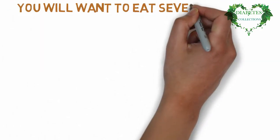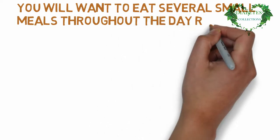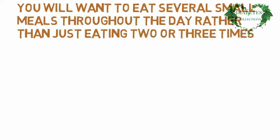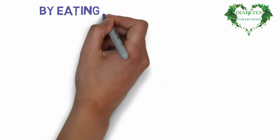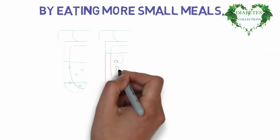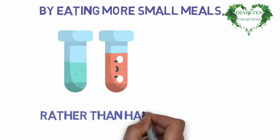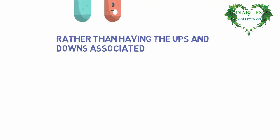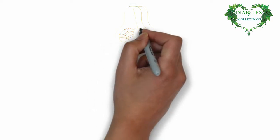You will want to eat several small meals throughout the day rather than just eating two or three times with a lot of time in between. By eating more small meals, you will keep your blood sugar at a more steady level rather than having the ups and downs associated with large meals followed by gaps in eating.